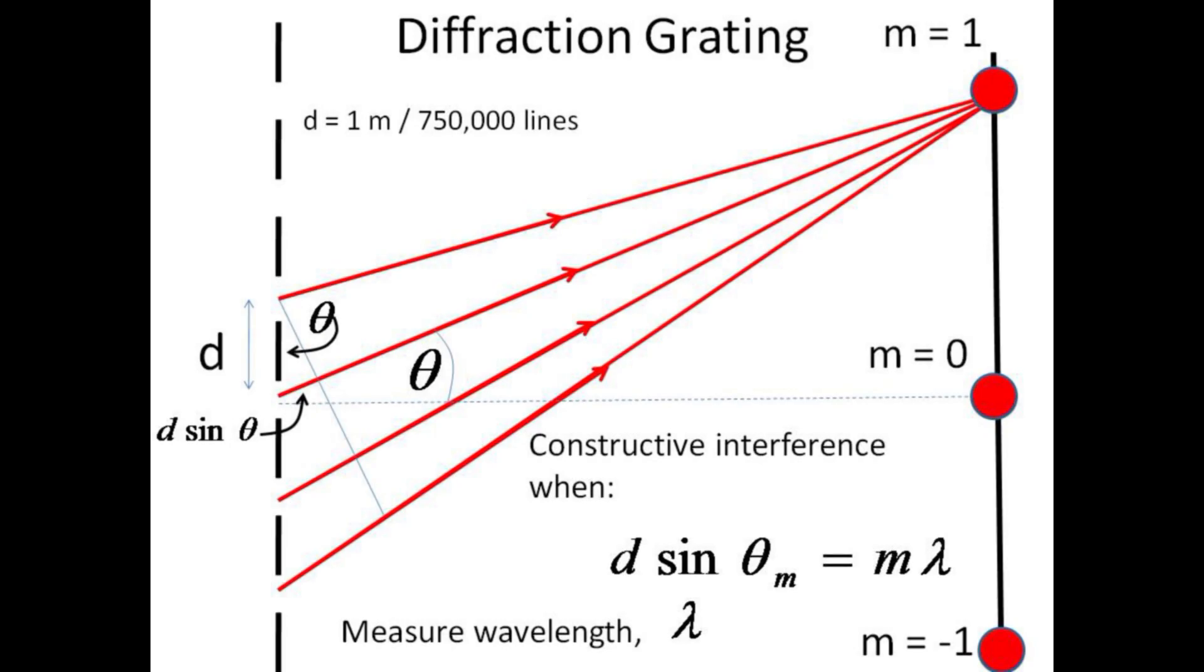The diffraction grating sorts light by wavelength, rather like a prism, yet it is flat. It has many lines that alternate between transparent and opaque, thus it is like having a large number of closely and evenly spaced slits.